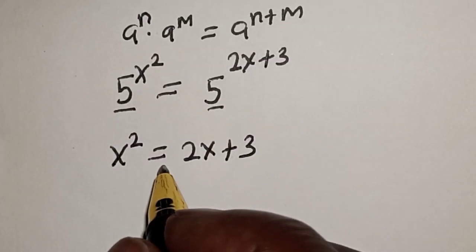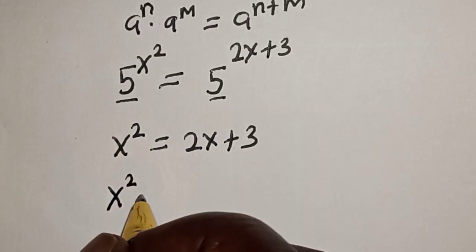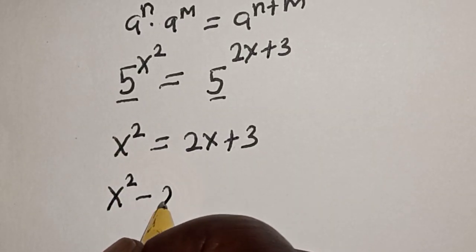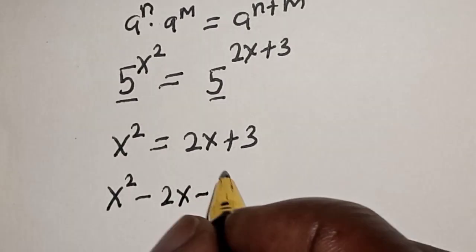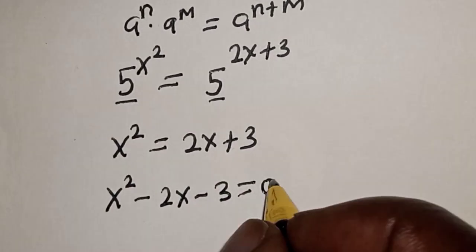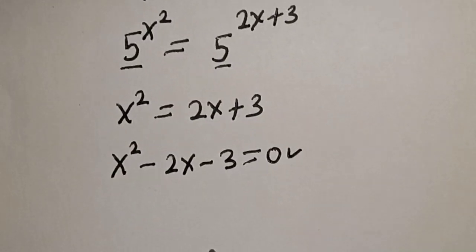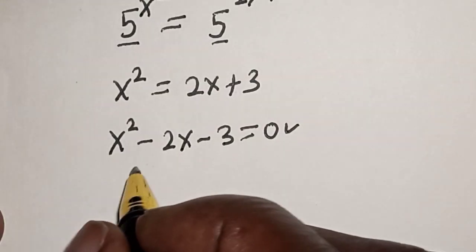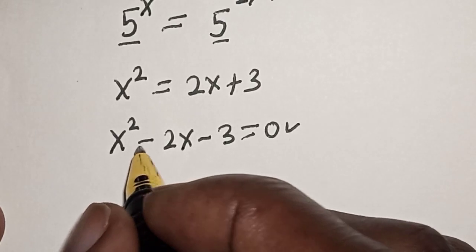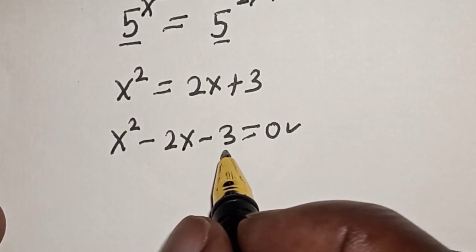Let's equate everything to 0. That is, s squared minus 2s minus 3 is equal to 0. This is a quadratic equation which can be solved using the factorization method or the quadratic general formula. But in this case, let's make use of the factorization method.